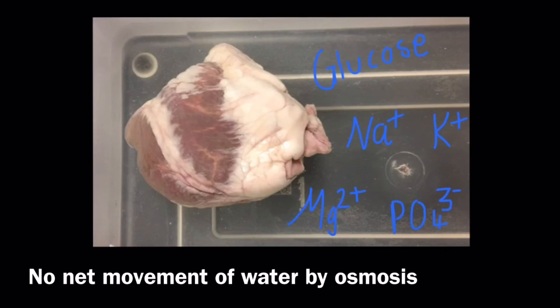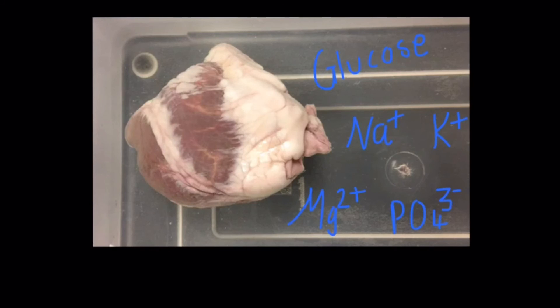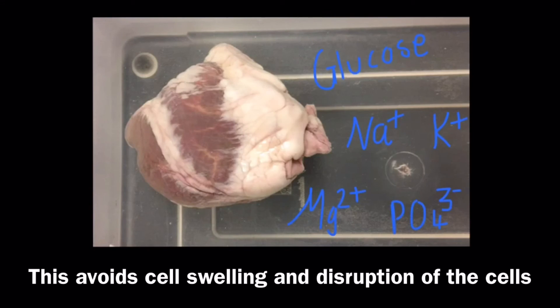By doing this and creating circumstances in which there is no net movement of water into or out of the cells, this avoids cell swelling and disruption of the cells so that these organs and tissues can be used in transplantation and that after the transplant the cells are still alive and operational.